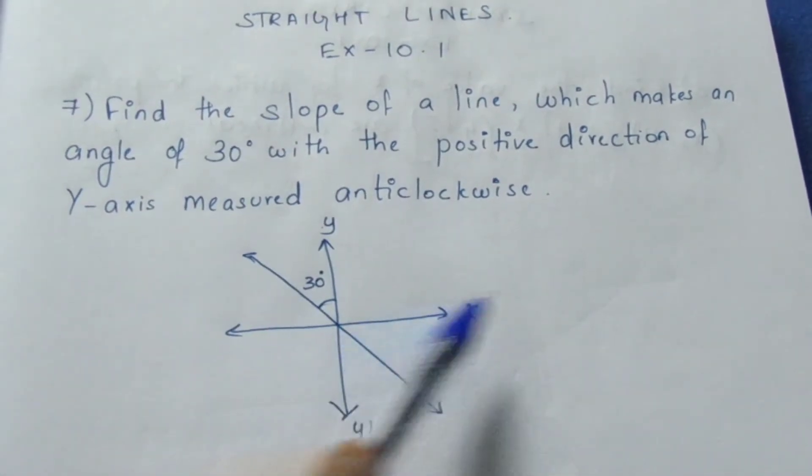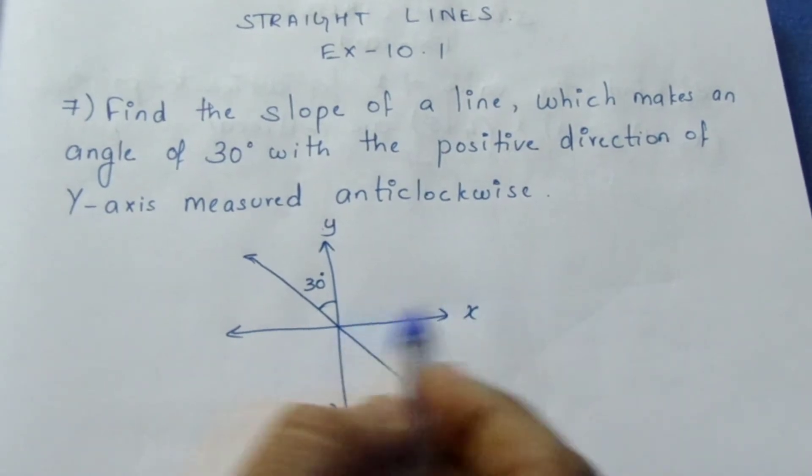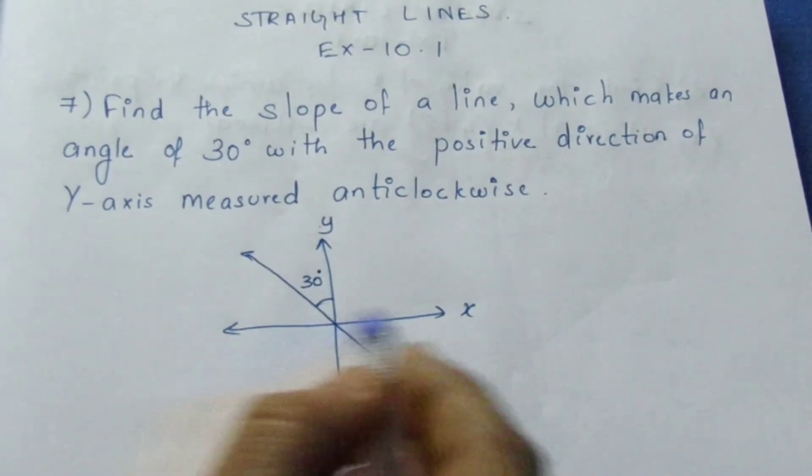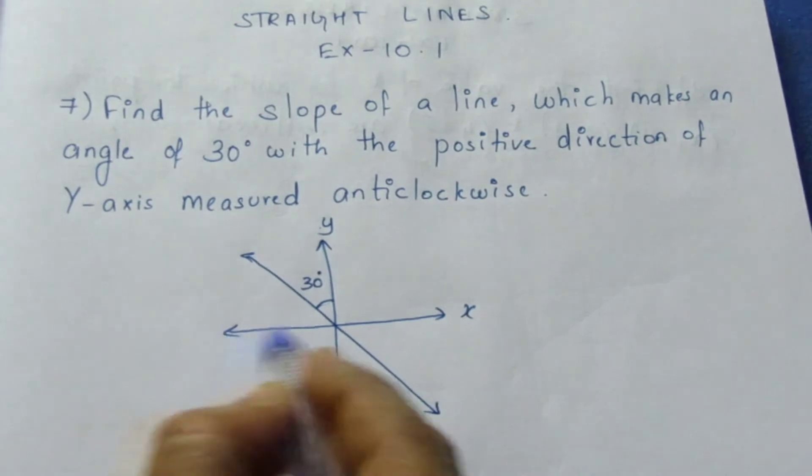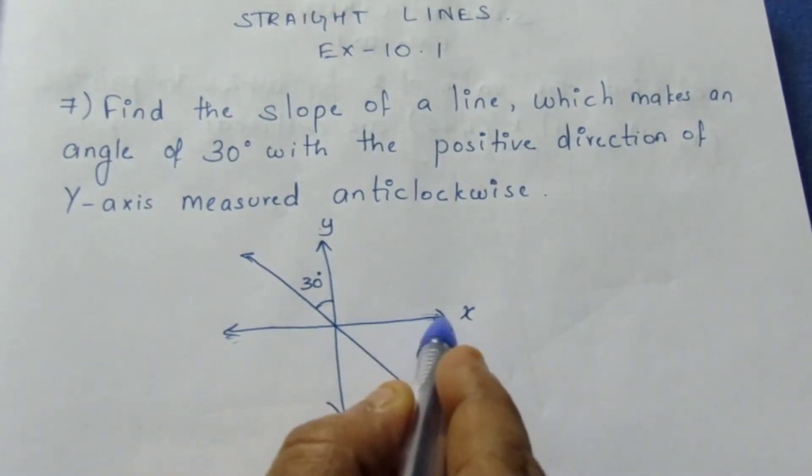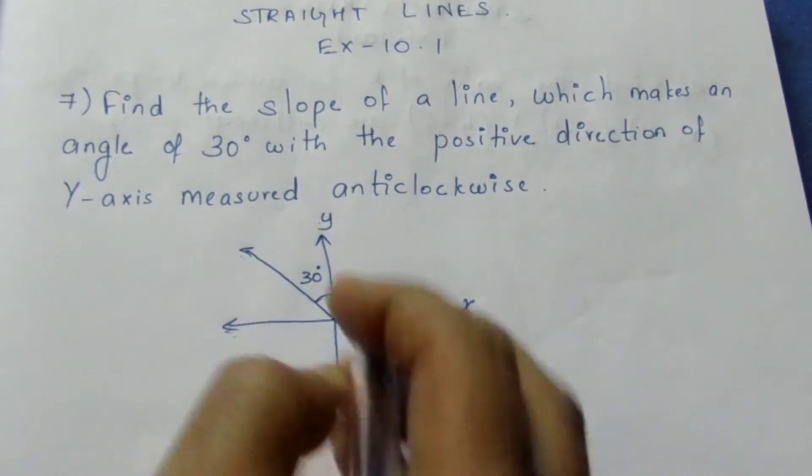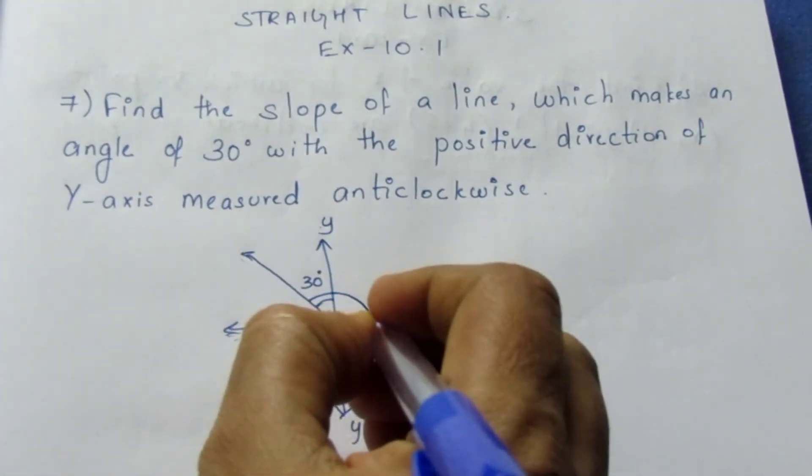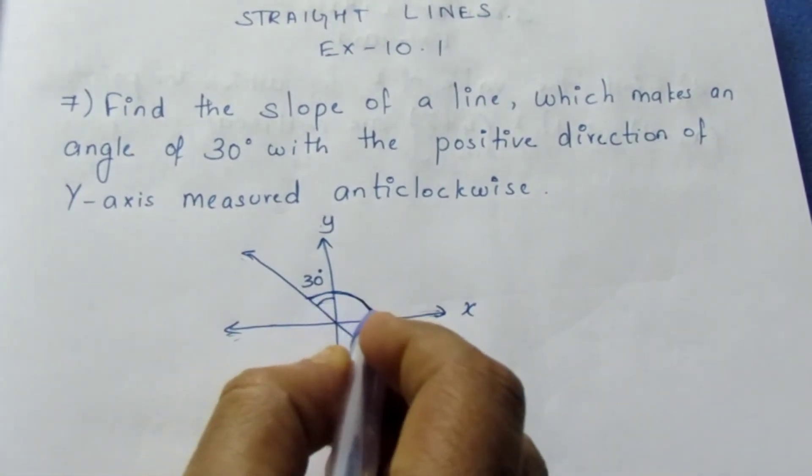To find the slope, slope is always with the base. The slope is the angle with the base, that is with the horizontal line. Here this is the horizontal line. The slope of this line will include this. This is the angle of the slope.